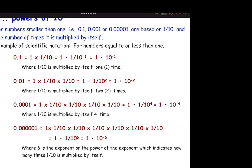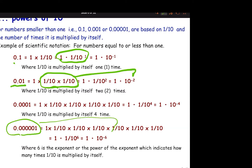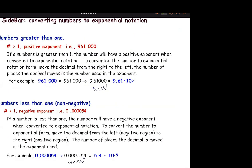What happens when the number is less than 1? We don't multiply by 10, but by 1 over 10. A number like 0.1 is 1 times 1 over 10; 0.01 is 1 times 1 over 10, twice — that's where we get the negative 2 exponent. For a very small number, we're multiplying by 1 over 10 six times, giving a negative 6 exponent. It's either 10 or 1 over 10 to get you the size, and the significant digits are what you keep.